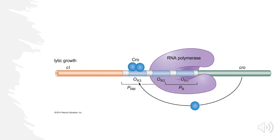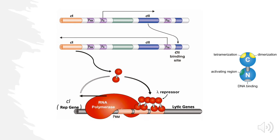Here's a visual of lytic growth. Cro is being expressed; it binds at OR3 with very high affinity, blocking PRM. RNA polymerase goes to PR and expresses rightward where Cro is, and we remain in the lytic cycle.